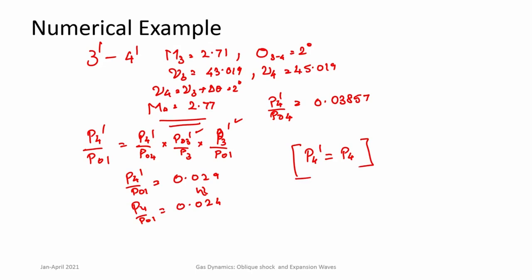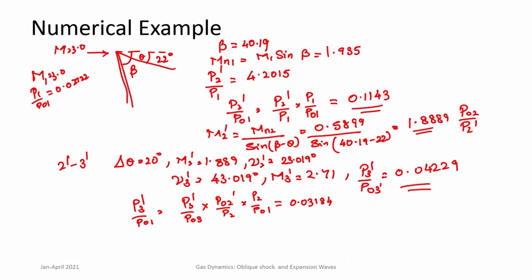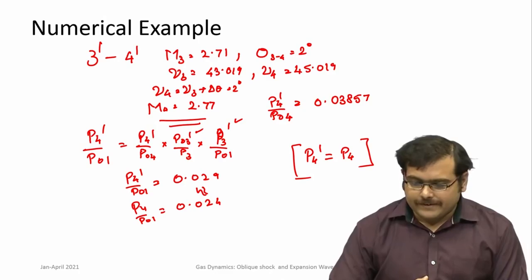If you know the pressures at each surface, you can always calculate the force — pressure multiplied by area is a force. You have now found out the pressure at each surface. From here you can calculate the force acting at each surface, then resolve them into parallel and perpendicular components to get lift and drag. This way of estimating the forces is known as the shock-expansion method. I hope this elaborate example has given you an idea of how to use shock wave and expansion wave relations to solve such problems. We will solve more problems in the next few classes. Thank you.